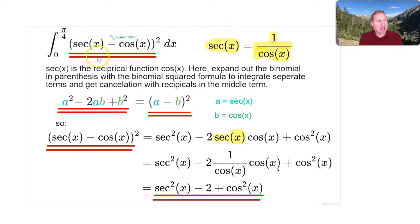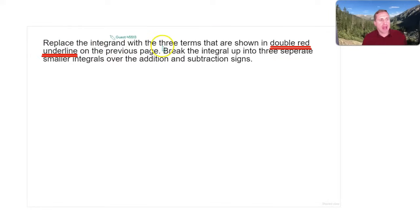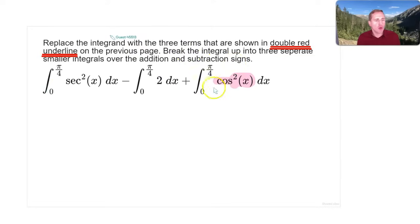But now we can leverage the fact that sec(x) is indeed the reciprocal of cos(x). Sec(x) times cos(x) here, sec(x) becomes 1/cos(x), and 1/cos(x) times cos(x), those are reciprocals of each other, those should cancel. So this term becomes 2. So now we have these three terms: sec²(x) - 2 + cos²(x).